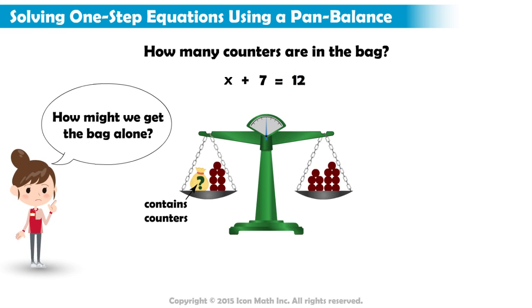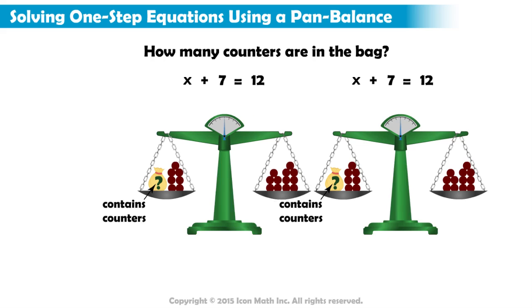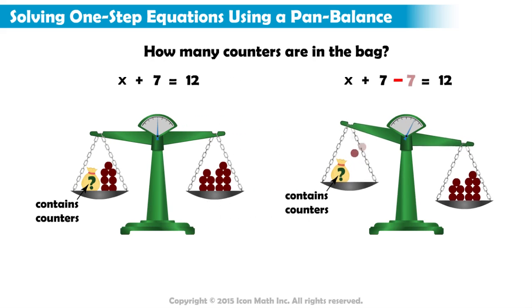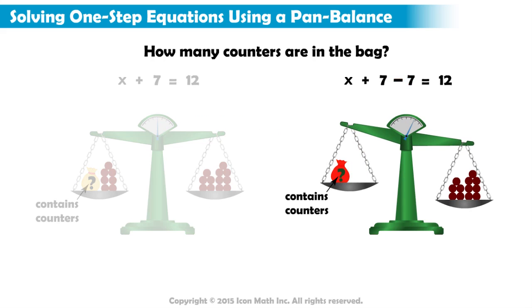How might we get the bag alone on the left side of the pan balance? If we remove the 7 counters from this side, the bag is now alone. But the pan balance is no longer level.